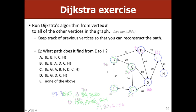The final answer for this example: the path goes E to G to A to B to F to D to C to H, with a total cost of 150.